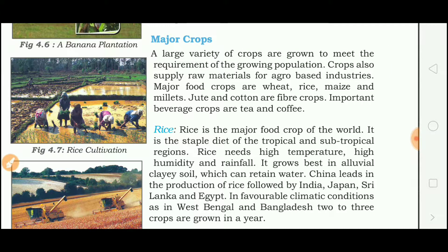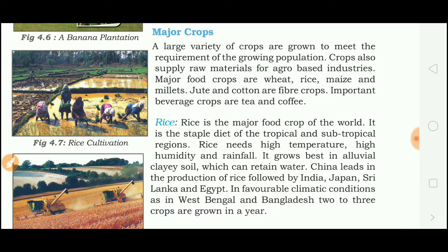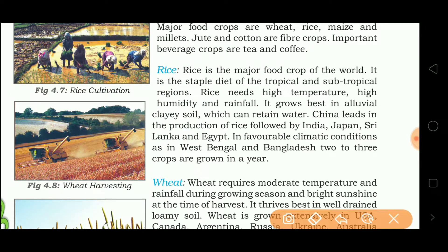Major food crops are wheat, rice, maize and millet. Jute and cotton are fiber crops, and tea and coffee are important beverage crops. Rice is the major food crop of the world and the staple diet of tropical and subtropical regions. It needs high temperature, high humidity and high rainfall, and grows best in alluvial clay soil which can retain water. China leads in the production of rice, followed by India, Japan, Sri Lanka and Egypt.